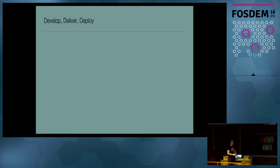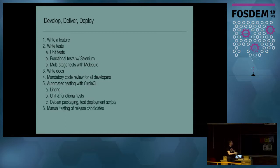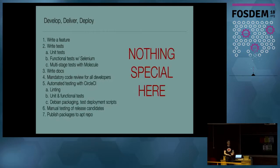Our development is actually very simple. We write a feature. We write tests. We write unit tests. We do functional tests with Selenium. We write multi-stage tests to test deployment and provisioning with Molecule. We write a bunch of documentation to help sources and admins and journalists and developers. We do mandatory code reviews for everything that gets merged by at least two members of team. So the person submitting it and the person signing off on it. We automate testing. We do linting.